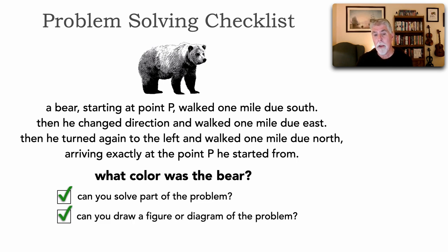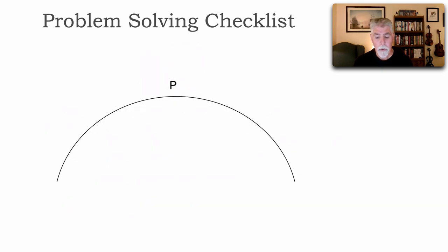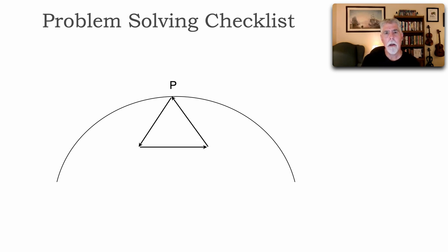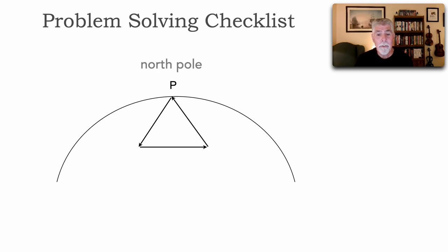This leads to the powerful one: can you draw a figure or diagram to represent the problem? If you start at one point and only go three directions, how can you possibly end up at that same point? Let's take point P — walk one mile due south, one mile due east, make a left, and walk one mile due north. Where on the globe could that be? By illustrating and drawing it, we realize the only place you can go due south and due north and arrive at the same point is the north pole.